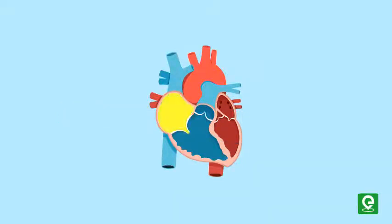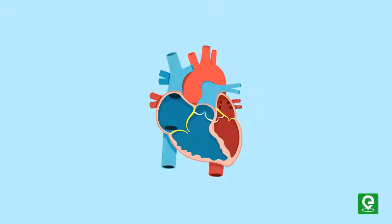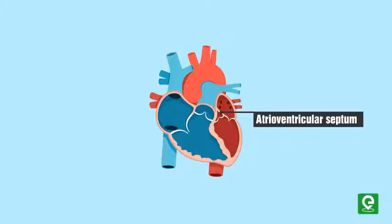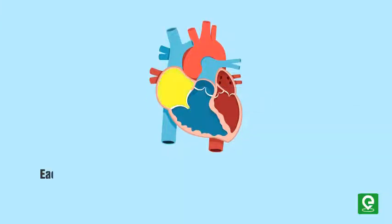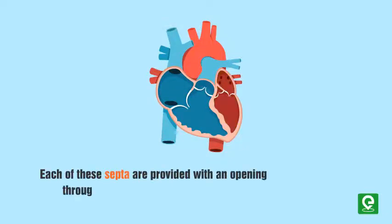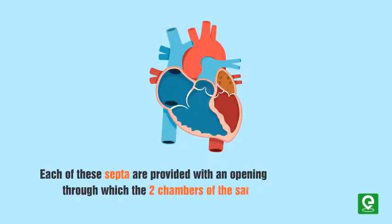A thick-walled interventricular septum separates the left and right ventricles. The atrium and ventricle of the same side are also separated by a thick fibrous tissue called the atrioventricular septum. However, each of these septa are provided with an opening through which the two chambers of the same side are connected.